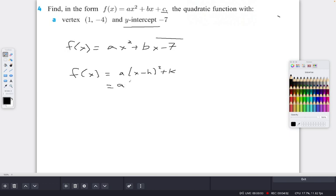Our h is 1, so this is my h. And my k in this case is subtract 4, so this is my k here. And then we have y = a(x - 1)² - 4.